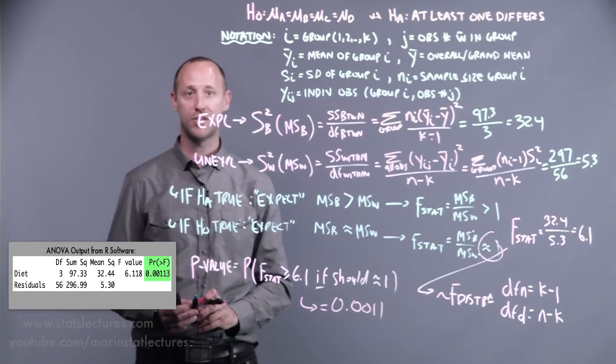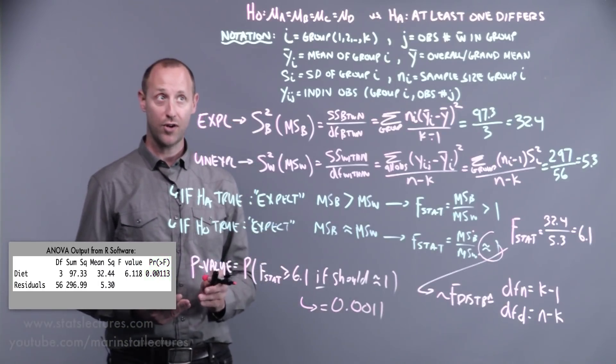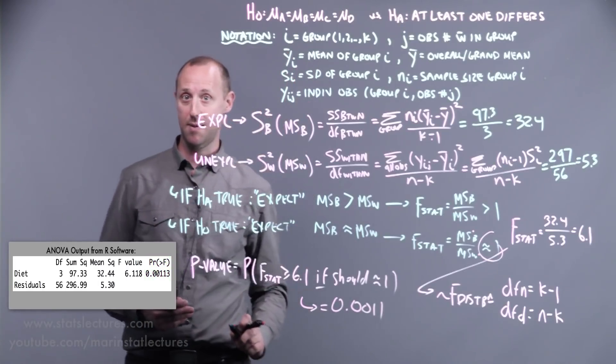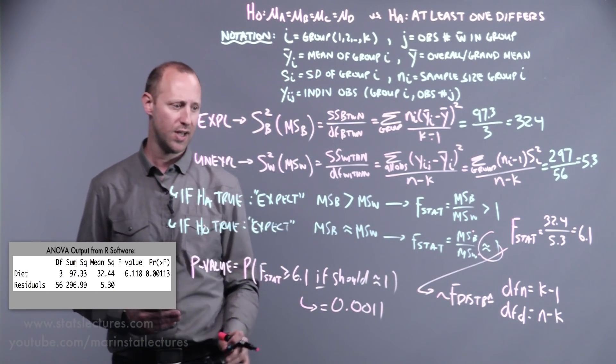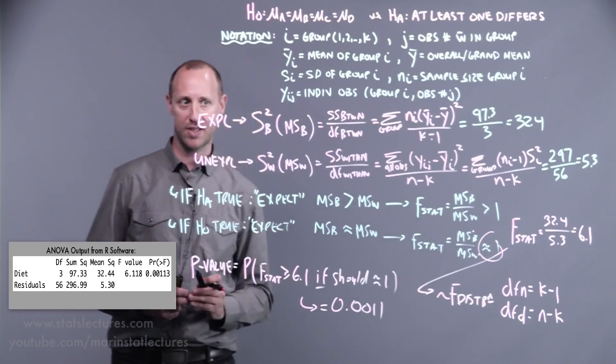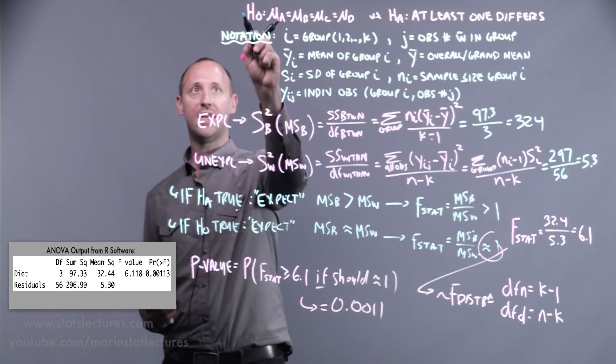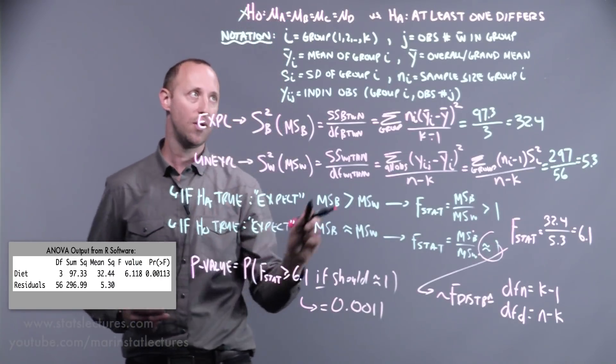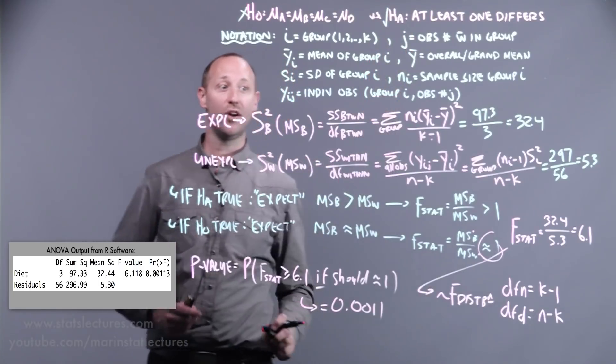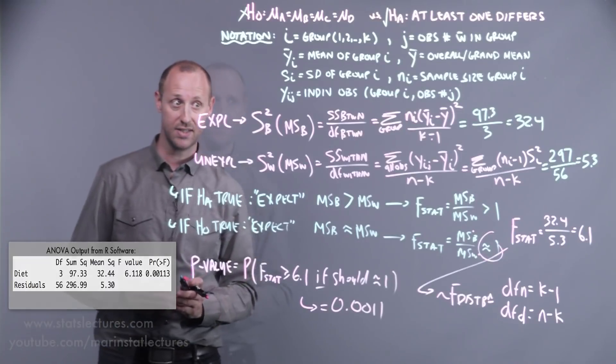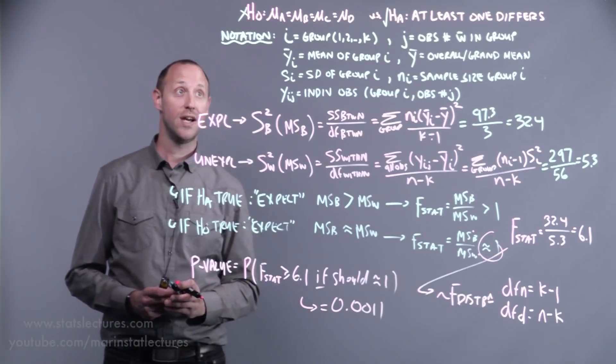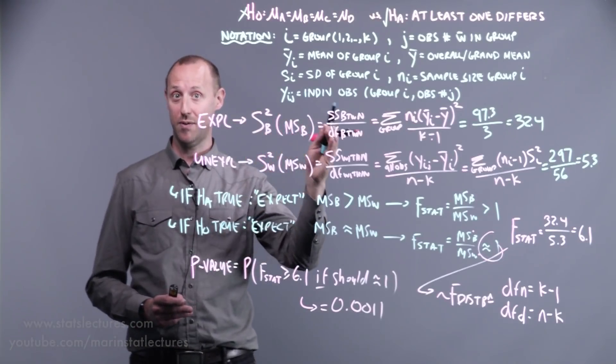You'll find that this comes out to 0.0011, roughly 0.1%. So if our null is true, if all these diets are the same, the chance of seeing an F stat like this, the differences we saw or even larger, is only going to happen about 0.1% of the time. That gives us evidence to reject our null hypothesis. We have evidence to believe the alternative is likely true. We have evidence to believe that at least one diet differs from the rest.